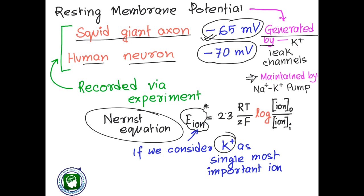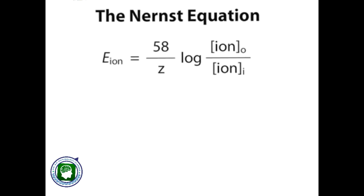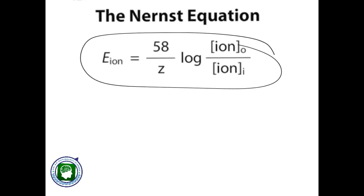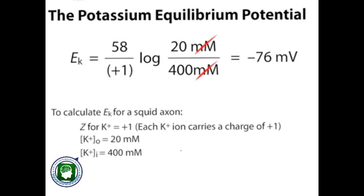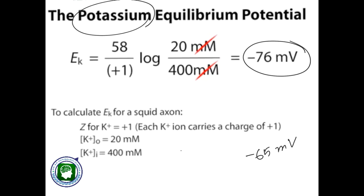If we calculate the Nernst equation for a squid axon, taking potassium as the single most important ion, and recalling the chart of ion concentrations we have seen, putting all the constant values into the Nernst equation, we get an expression. In the case of squid, the outside concentration of potassium was around 20 millimolar and the inside concentration was around 400 millimolar. Calculating the equilibrium potential for potassium in the squid axon, the answer comes to around minus 76 millivolt, which is much more negative than what Hodgkin and Huxley found — around minus 65 millivolt on the oscilloscope.